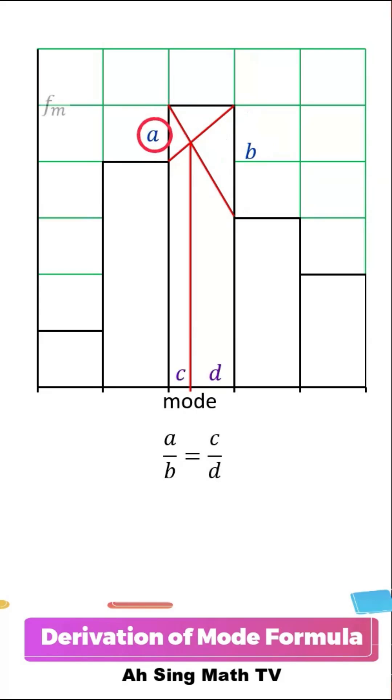But then, what is A? A is simply the frequency of the modal class in excess of the frequency of the class before. By using the similar idea, we obtain B.